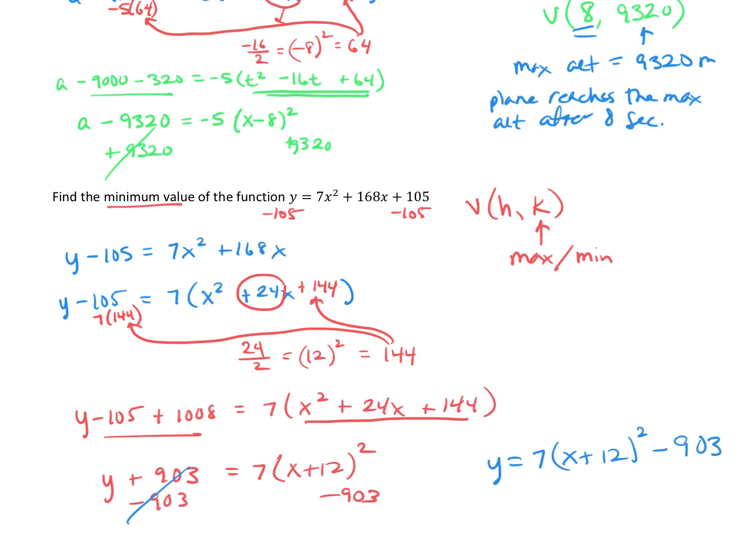That allows us to identify the vertex of negative 12, tricky x, I almost got tricked, negative 12, negative 903. Which one of those is the max or min? That is going to be our y coordinate. And they did ask for a minimum. So we know that our minimum is equal to negative 903.